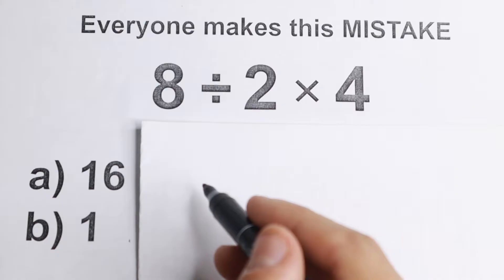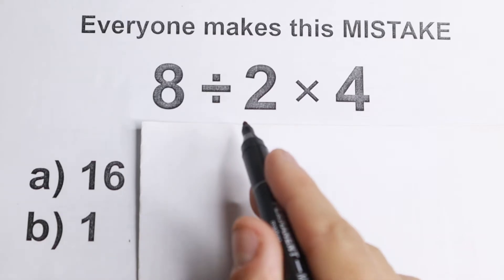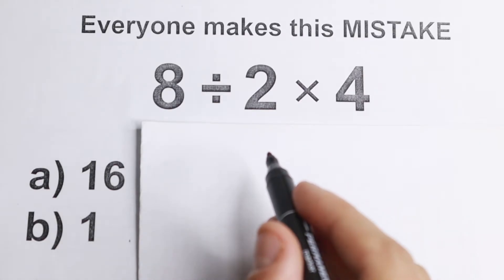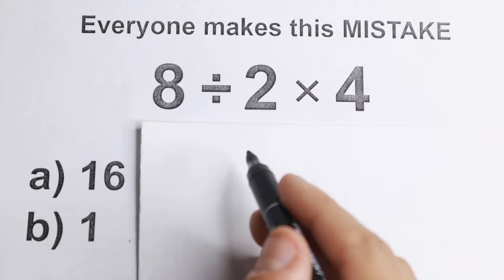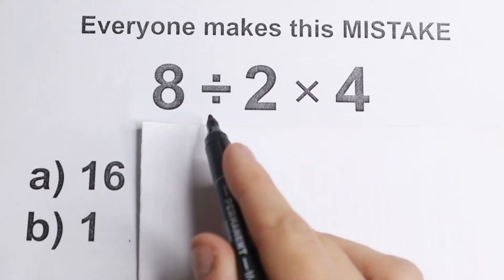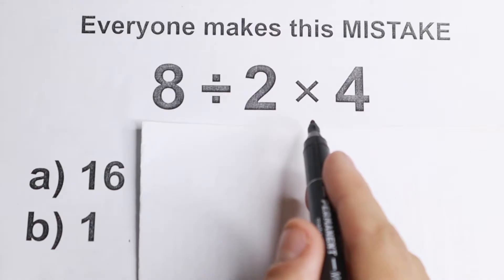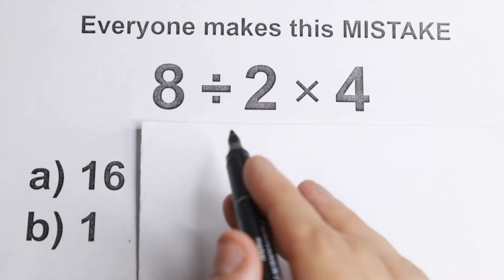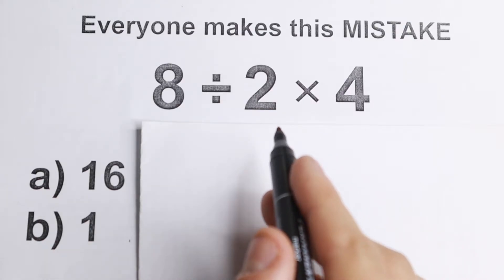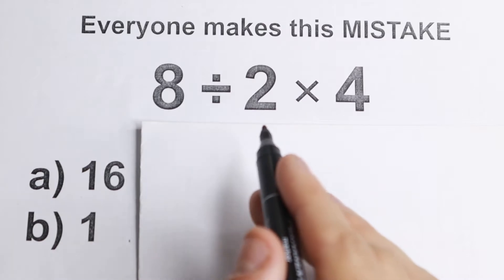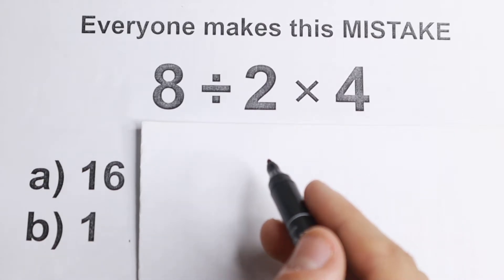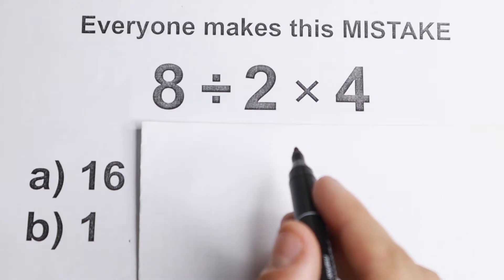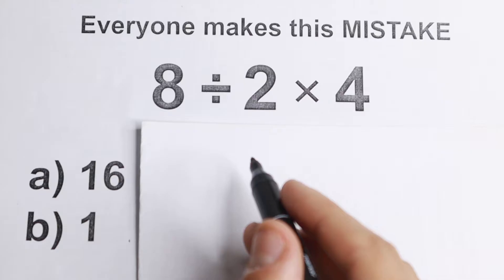Here is the problem: we have 8 divided by 2, times 4. What makes all the difference in the world is the order we do this problem. Do we do the division first and then multiplication, or should we do multiplication first and then division? Whatever order you select is going to create a different answer. We need to understand the correct order, and that's where this acronym comes in — we are talking about the order of operations.